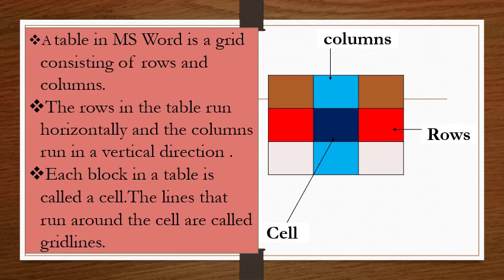The rows in the table run horizontally and the columns run in a vertical direction. Each block in the table is called a cell. The lines that run around the cell are called grid lines. You can see one image which tells you what are columns, what are rows, and what is a cell.